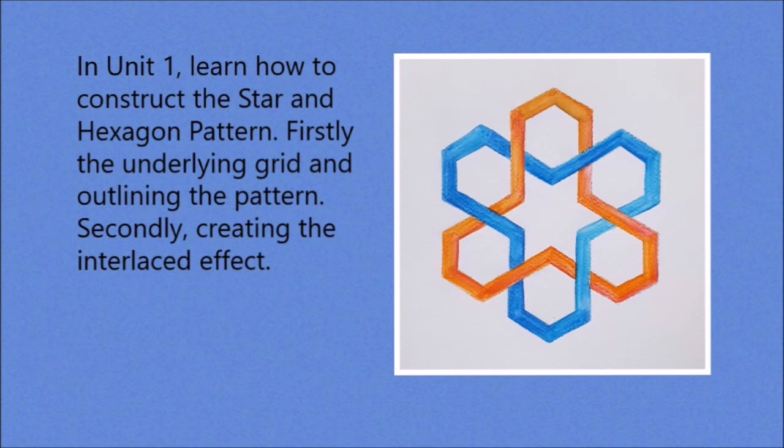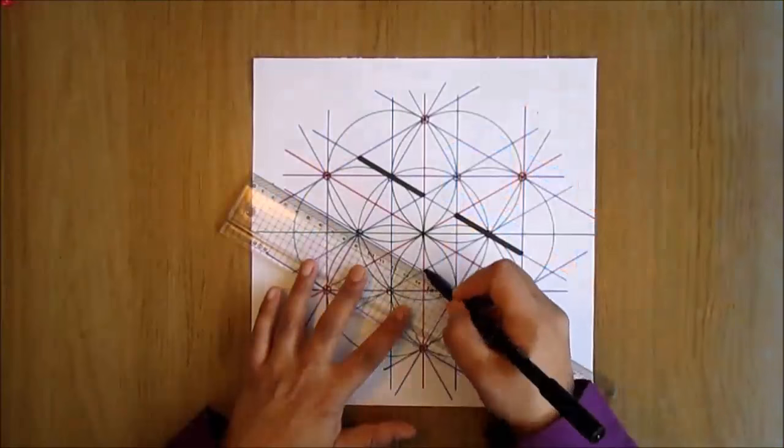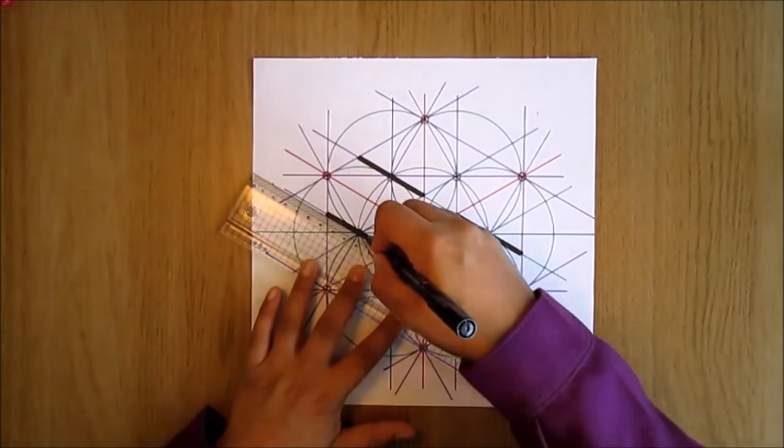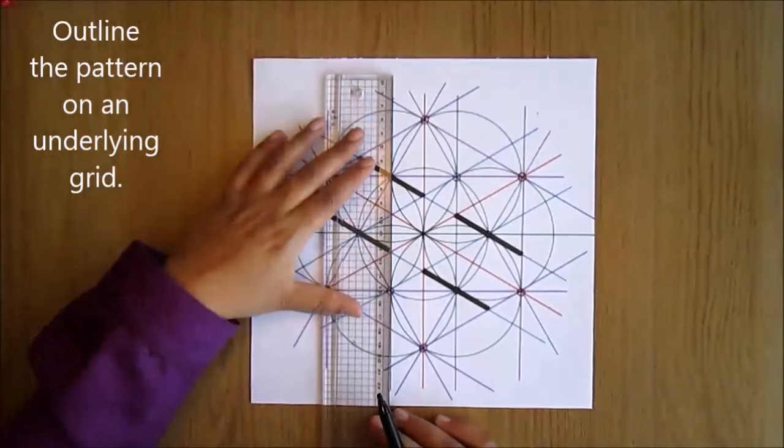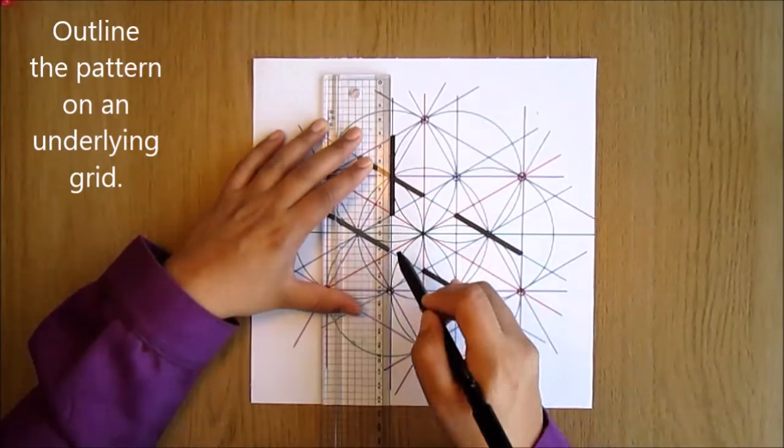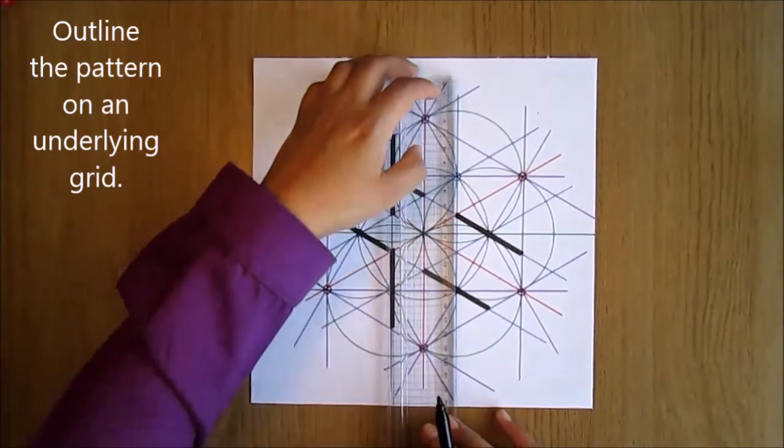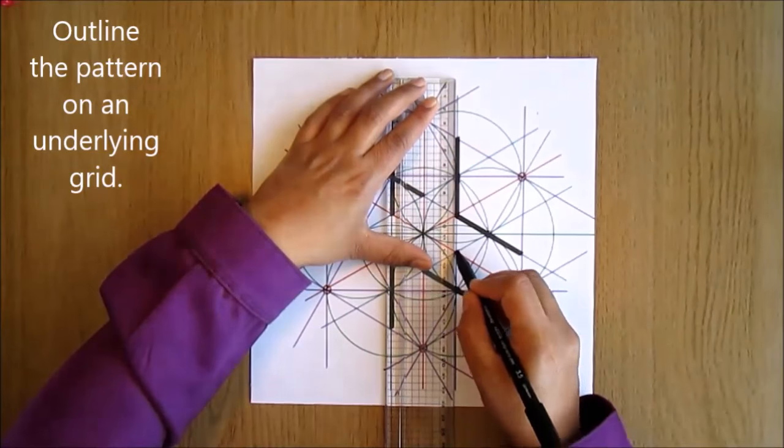In Unit 1, learn how to construct the star and hexagon pattern. Firstly, the underlying grid and outlining the pattern, and secondly, creating the interlaced effect. I'll also show you clearly how to outline the pattern on the underlying grid. I use quite a thick black calligraphy pen so you can see the pattern emerge clearly.